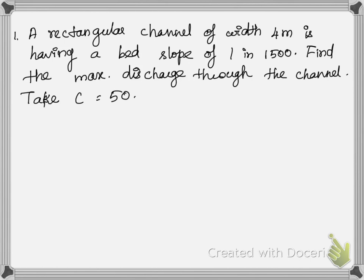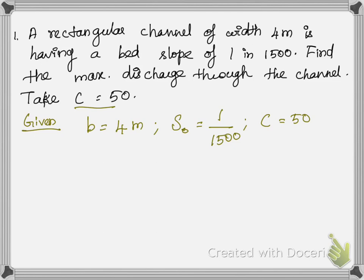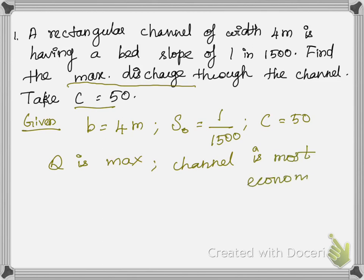Whenever a problem is given, first write the given data. The width b is equal to 4 meters, the bed slope S₀ is equal to 1 by 1500, and C is equal to 50, which is the Chezy constant. No other data is given — not even the depth. So read the problem carefully to capture the hint word. Here they have given 'find the maximum discharge' — that is the key hint word.